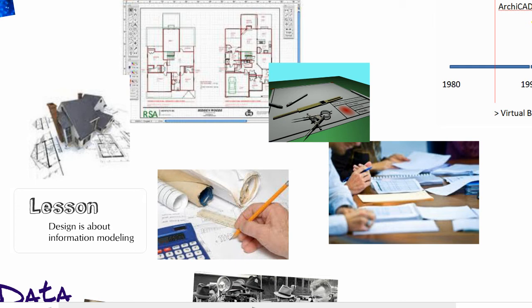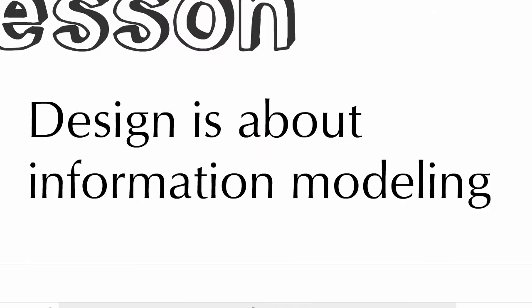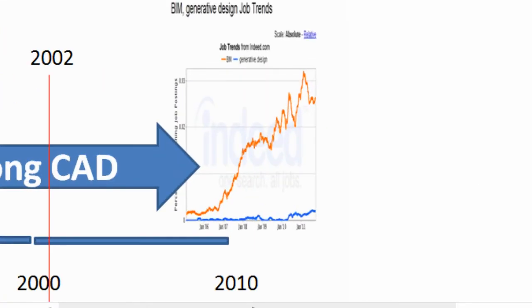Only recently designers have come to accept that with computers you can do things differently. You can do things better. It took a long time for designers to realize that design is fundamentally about information modeling. As you can see from this graph of BIM jobs, its wide adaptation started around 2005. What happened before then? Not many seem to have known about it. Perhaps it was a bit like generative design.